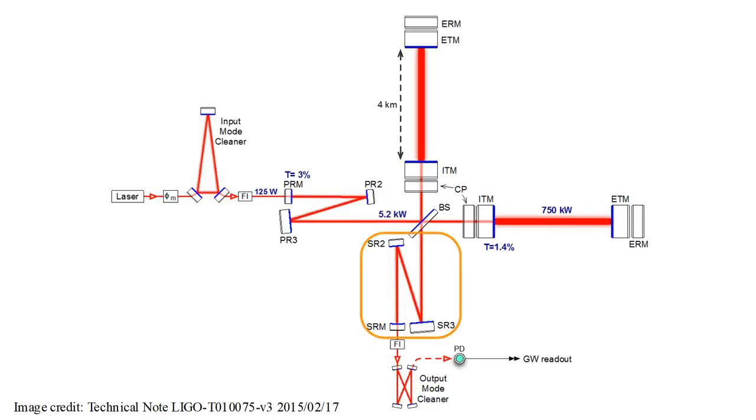A final enhancement is a system of signal recycling mirrors. This reflects the tiny interferometer signal back into the interferometer arms, and can be adjusted to effectively tune the interferometer to enhance certain desired gravitational wave frequencies.